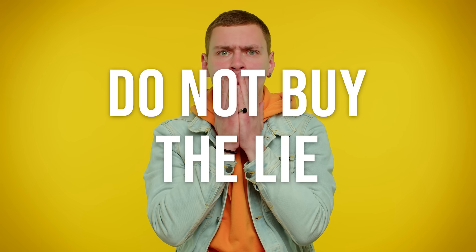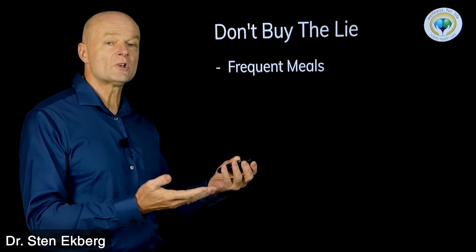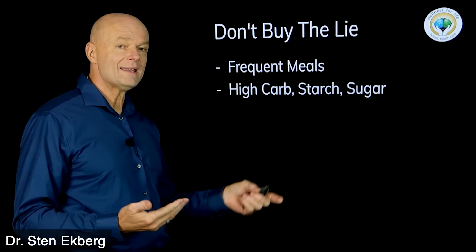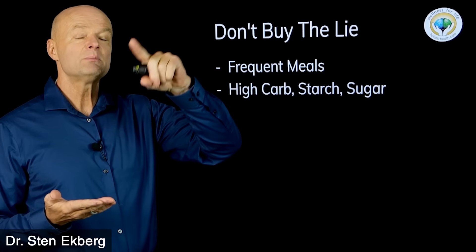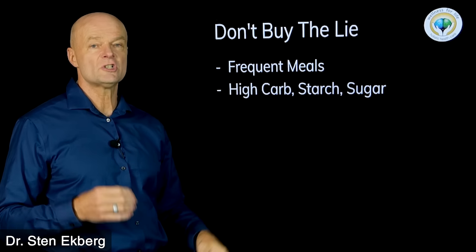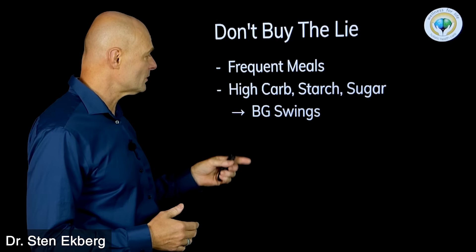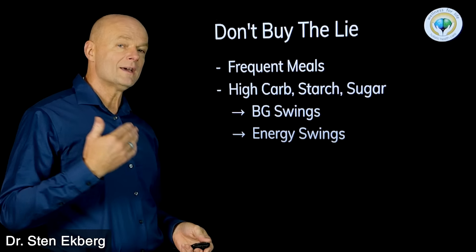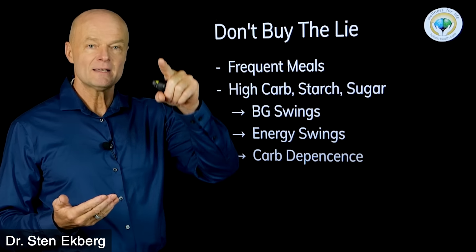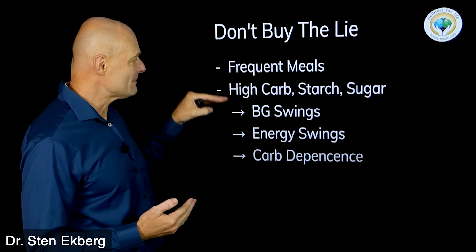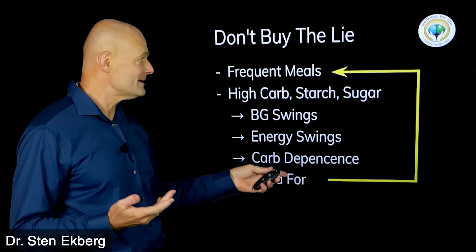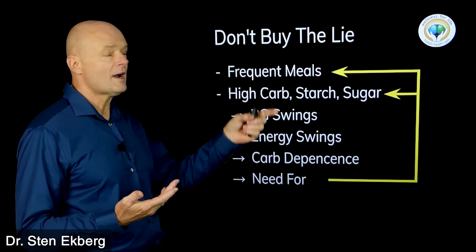Don't buy into the lie that blood sugar is so important that it's our only source, our primary source of fuel, and therefore we need to eat frequent meals to maintain it. That leads us to eating high carbs, starches, and sugar. If we get these blood sugar swings and get on the low end of that roller coaster, we're going to be craving these high carb, starchy, sugary foods to bring that blood sugar up as fast as possible. Now we get blood sugar swings, energy swings, carb dependence. With this pattern you train your body to have highs and lows. Every time it's low, you depend on these carbs to bring it back up. Once you're in that situation, you perpetuate the need for more frequent meals and more high starchy, sugary foods.